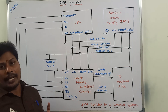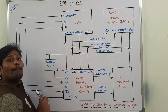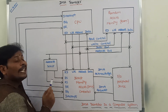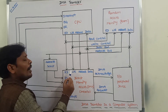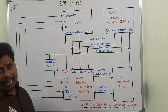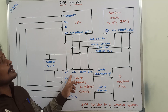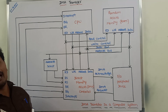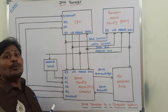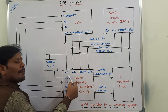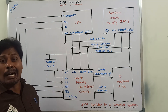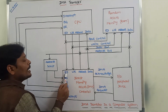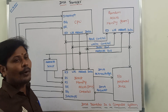Once the CPU disables all the buses handled by it, the DMA controller becomes the master of the memory buses and can manage the memory operations. Now the DMA controller places the current value of the address register on the address bus and initiates two control signal lines: the read control signal line and the write control signal line.